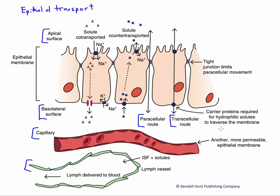You might think that the paracellular route would be a highly permeable pathway because it's not going through the cells. That's not actually true, due to the presence of cell-cell junction proteins known as tight junctions. These limit the permeability between cells along this paracellular route, which allows us to control things we might be moving across the transcellular route so that they don't just diffuse back down a gradient between the cells.